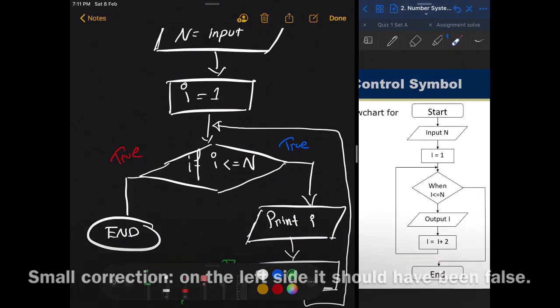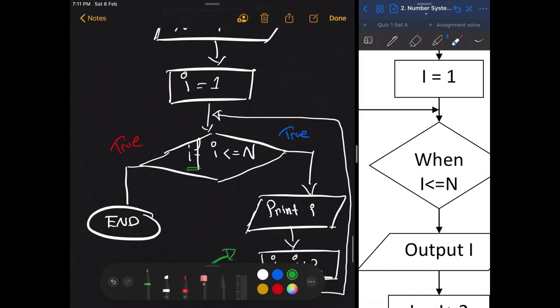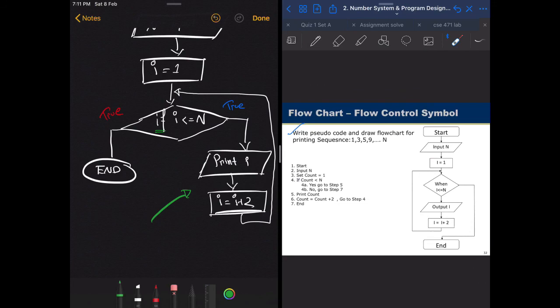A small correction here: on the left side we would have false, not true. And here they have written when. So when is basically saying that this is a loop. In our case, we have written if. Both do the same thing, so there's no problem with any one of these. You can write anything you want as long as it shows that a loop is going on here. So for our case, the loop basically starts from here, here, here, and goes up to here, and again here. This is our loop.